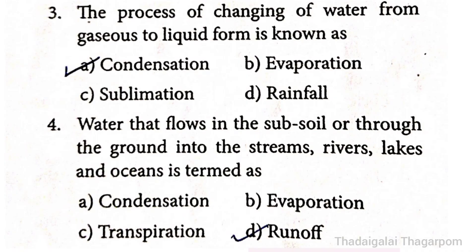4th one: Water that flows in the subsoil or through the ground into the streams, rivers, lakes and oceans is termed as — Condensation, Evaporation, Transpiration, or Runoff. The correct answer is D option: Runoff.